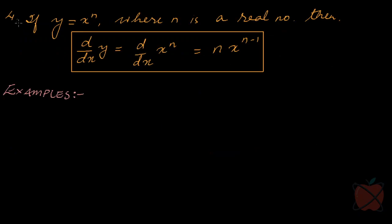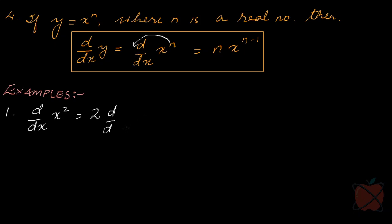The fourth theorem is the most important one. If y = x^n, where n is a real number, then dy/dx = d/dx of x^n: this n goes in front, and then the power of x reduces by 1. For example, d/dx of x² — applying this theorem, 2 comes in front, and x is now to the power 2 - 1 = 1, so you get 2x. Another example: d/dx of x^100 gives 100x^99.